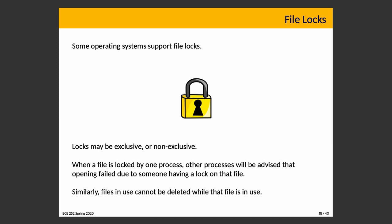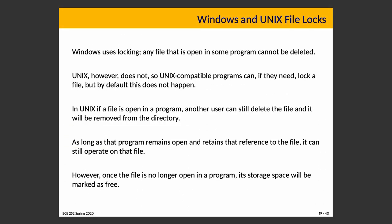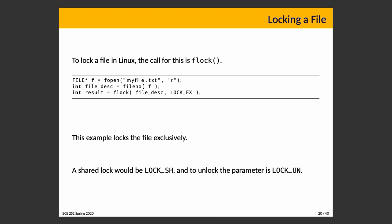Some operating systems support the idea of locks. In Windows, if you try to delete a file that's currently open, it is locked by whatever program has it open and therefore you can't delete it. Not every operating system does this. Locks may be exclusive or non-exclusive. With an exclusive lock, other processes will be unable to open the file. In Unix, locks are something you have to explicitly ask for — by default, that does not happen.